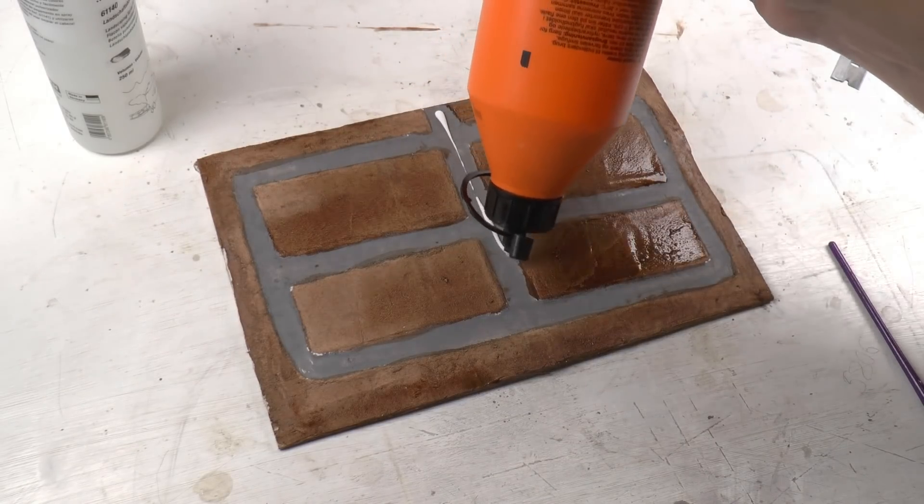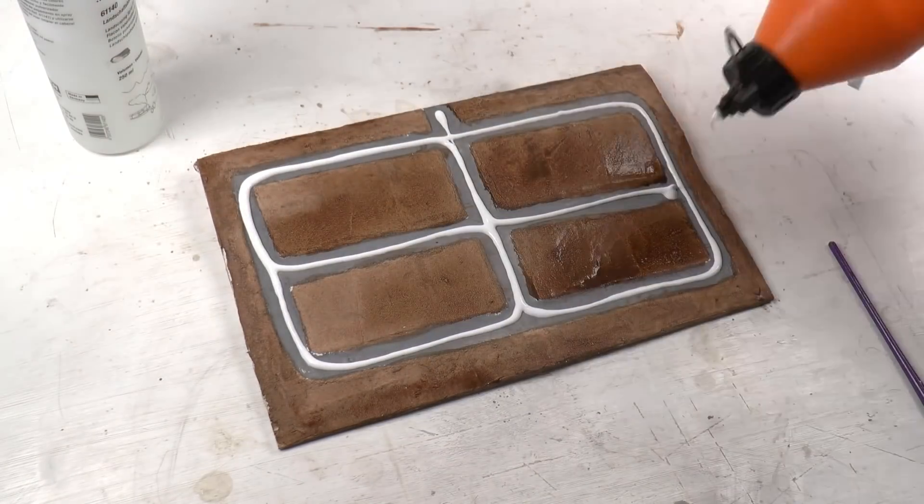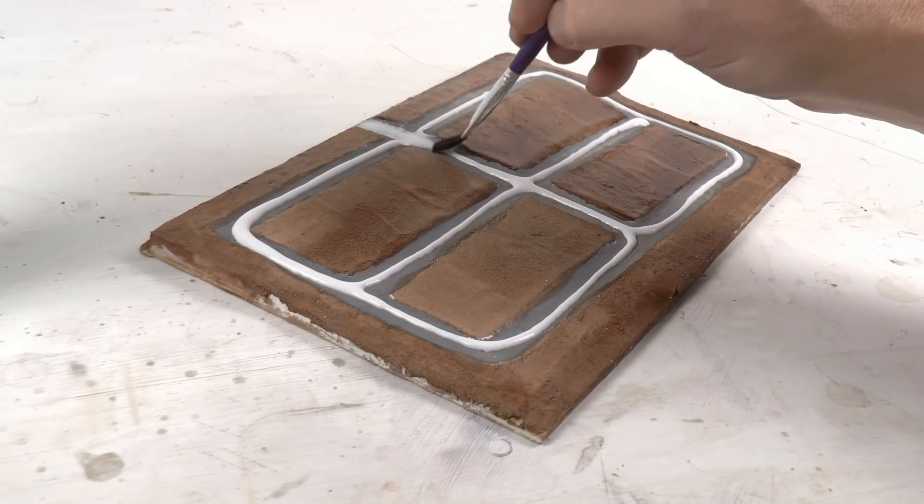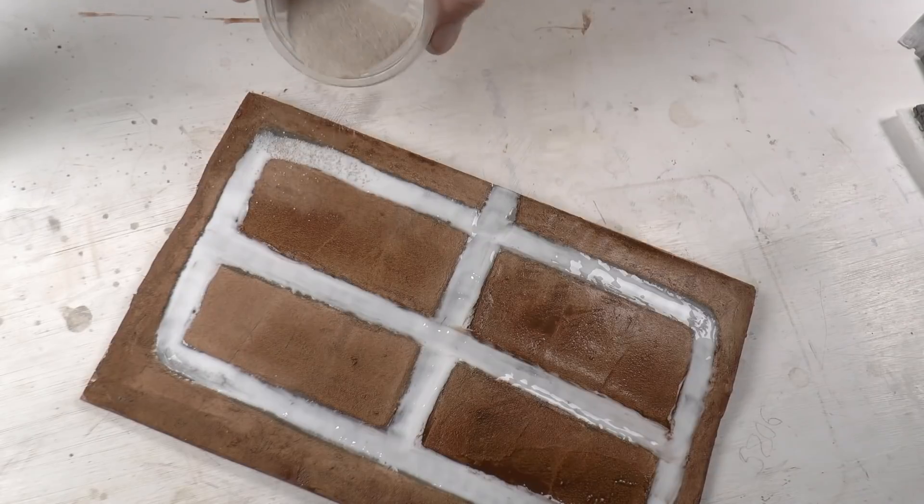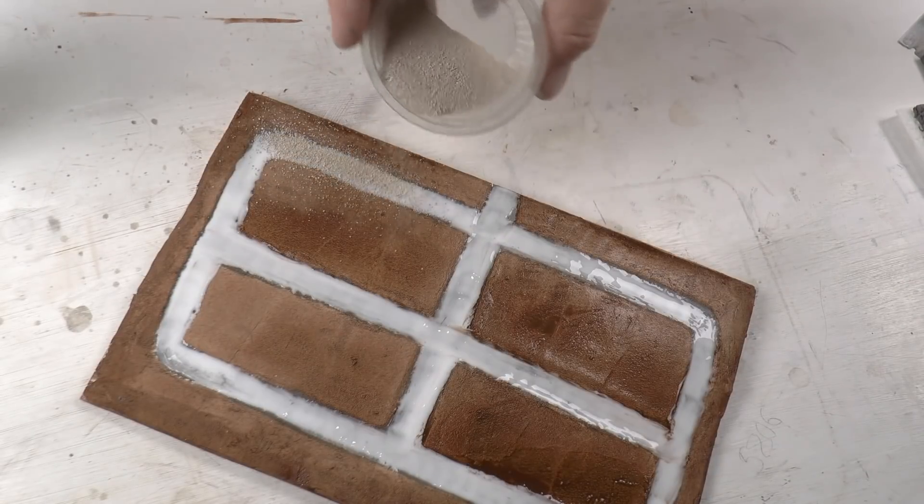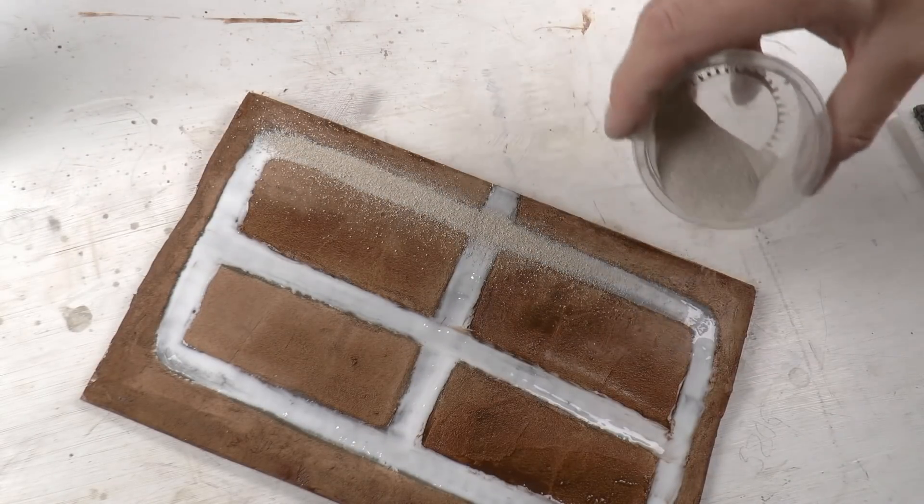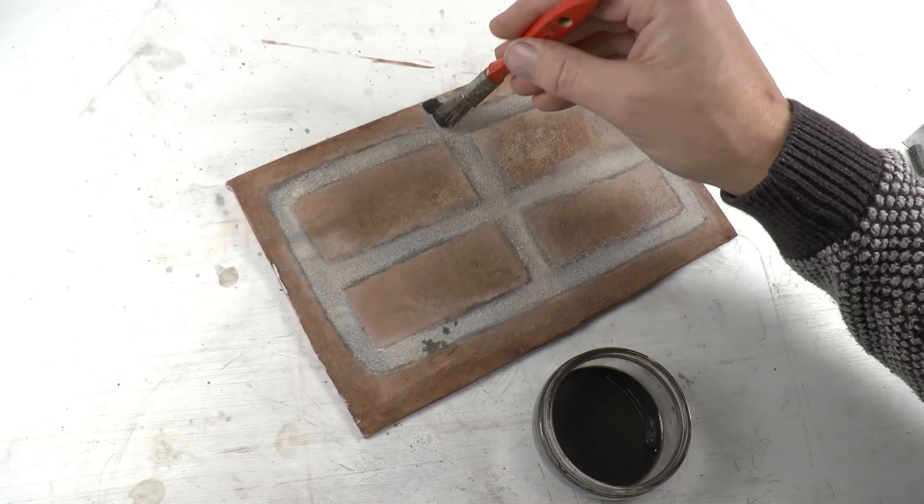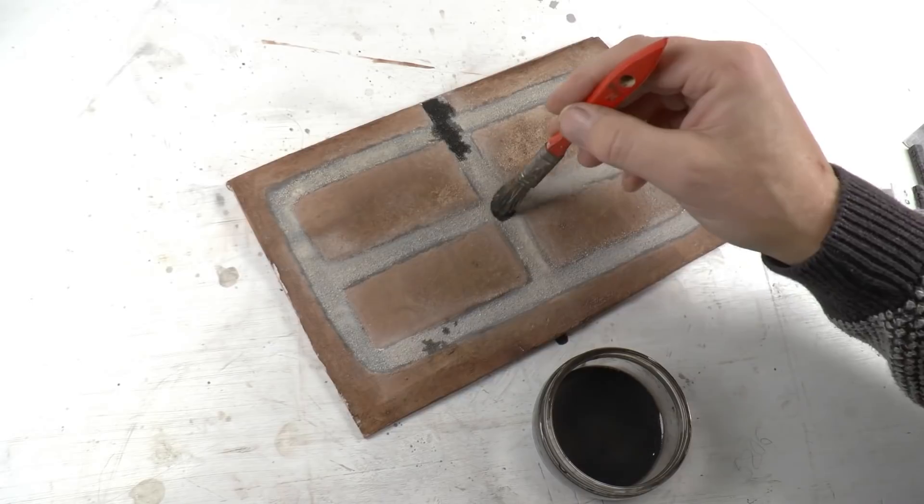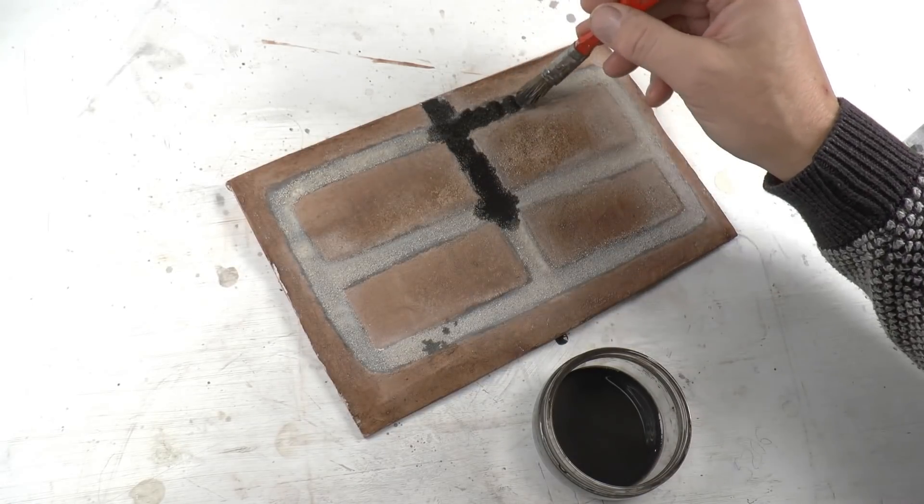So now we can glue it in place. For this I'm using PVA glue. Spread the glue using a flat white brush and then sprinkle in that pigmented chinchilla sand into the wet glue. Now leave that to dry and then we're gonna make a mix of wash.